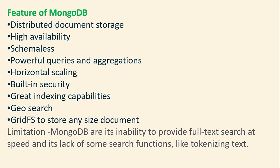In case of MongoDB, the features include distributed document storage, high availability, schemaless design, powerful queries and aggregation, horizontal scaling, built-in security, grid indexing capabilities, geo search, and the ability to store any size documents. When it comes to the limitation of MongoDB, it has an inability to provide full-text search at speed and lacks some search functions like tokenization.